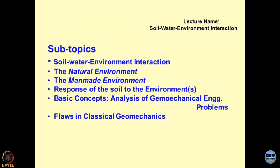With this in view, to deal with the definition of soil-water-environment interaction — the natural environment, how human activities have modified it to a manmade environment — we will try to understand the components of these two. Then of course, what is the response of the soil to different types of environments: elevated temperatures, high pressures, low pressures, low temperatures, different types of chemicals coming in contact with the soil in a saturated, dry, or semi-saturated form.